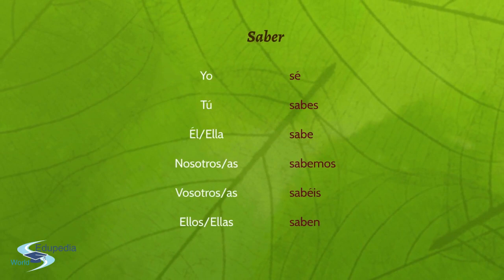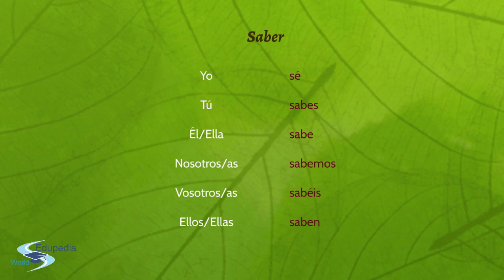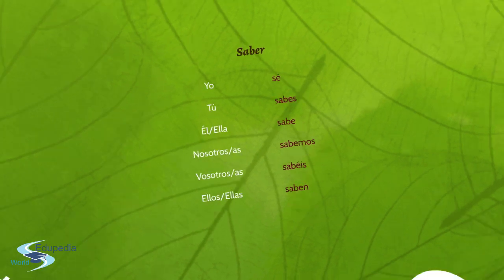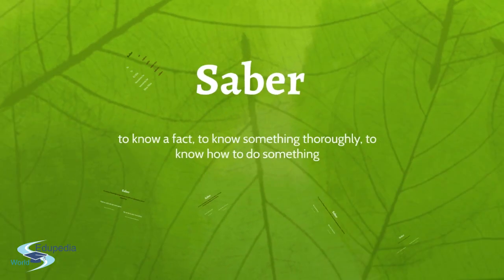Let's see how to conjugate saber in the present. It is almost regular — it just changes in the first person singular. Yo sé. Tú sabes. Él, ella sabe. Nosotros, nosotras sabemos. Vosotros, vosotras sabéis. Ellos, ellas saben. As you can see, the only irregular form is the first person singular; the rest are regular conjugations.